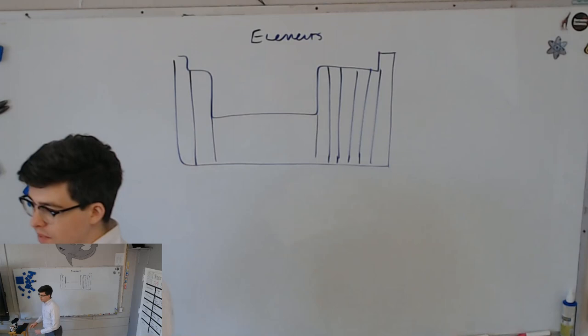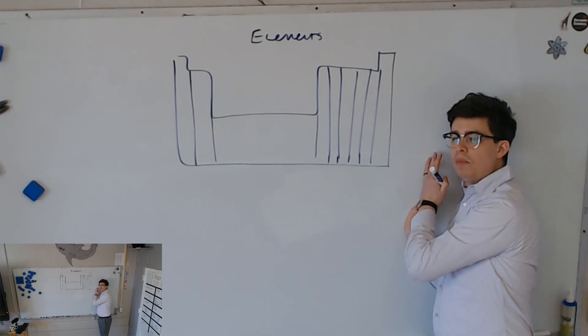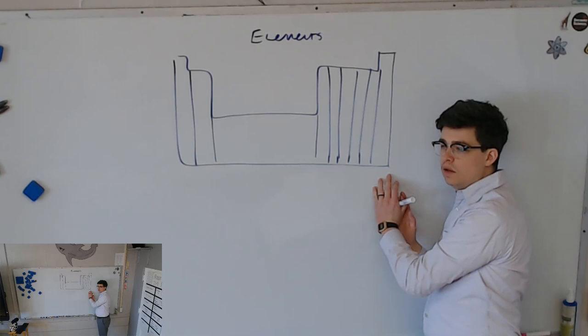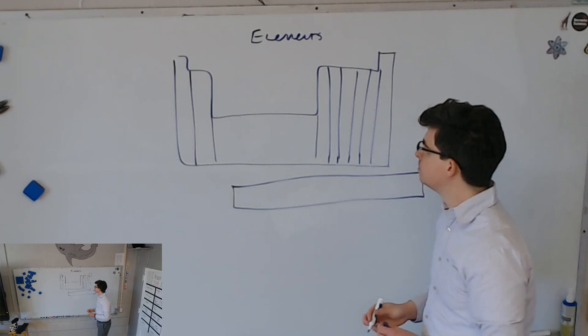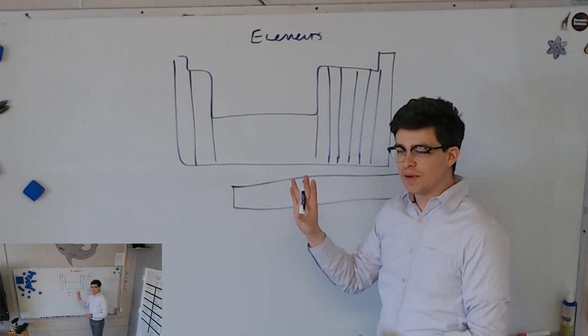Let's label these. First thing we should draw is, by the way, what do we call the vertical columns? That's exactly right, Mitchell. What do we call the vertical columns on the periodic table?